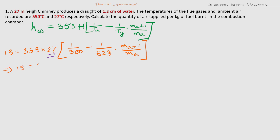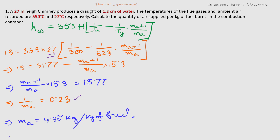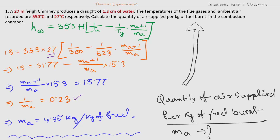This is a simple equation. By solving it, we find Ma plus 1 divided by Ma into 15.3, equal to 18.77. Solving further, we get 1 by Ma equal to 0.23, and from this we get Ma equal to 4.35 kg per kg of fuel. So Ma is the mass of air supplied — the quantity of air supplied per kg of fuel burnt in the combustion chamber is 4.35 kg per kg of fuel burnt.